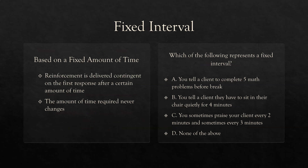Now we're looking at interval schedules. The only thing that changes is we're going from responses to time. A fixed interval schedule is based on a fixed amount of time. Reinforcement is delivered contingent on the first response after a certain amount of time. If our interval is five minutes, we wait five minutes, and once we see the behavior happen after the five minutes, we deliver reinforcement. If it's a fixed interval 5, then five minutes is always five minutes — that's the key.